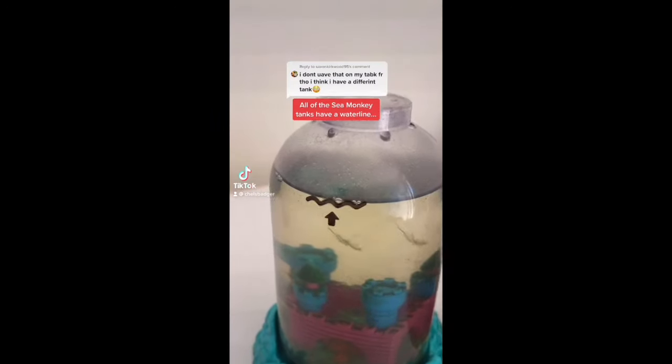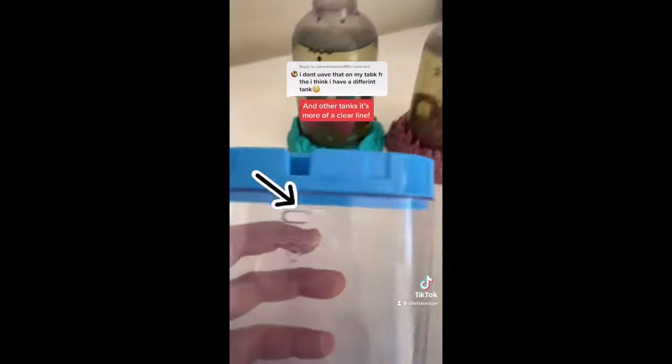All of the sea monkey tanks have a water line. On some of the tanks it's a black line and on other tanks it's more of a clear line. Sea monkeys are a living animal and they're also a pet, so they're no different to having a cat, a dog, or a turtle. If you're not ready for the responsibility that comes with being a pet owner, you're not ready for sea monkeys and they're probably not the best choice for you.